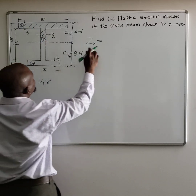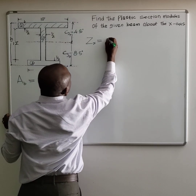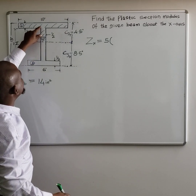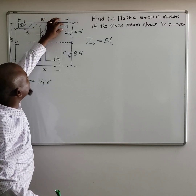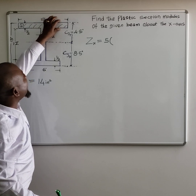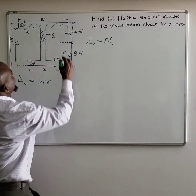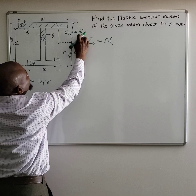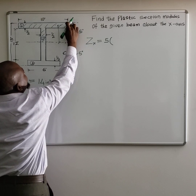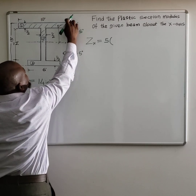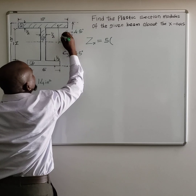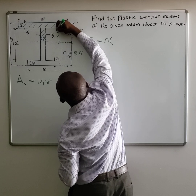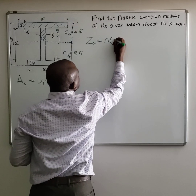We know the area of the top rectangle is 5 square inches. Now, what is the distance between the center of this 0.5-inch-height flange and the centroid? From here to here, we notice this is 4.5 inches. We know 0.5 divided by 2 is 0.25. Minus 0.25 from 4.5, so this value is 4.25. So you multiply the area by 4.25.